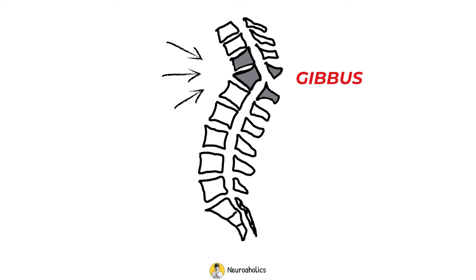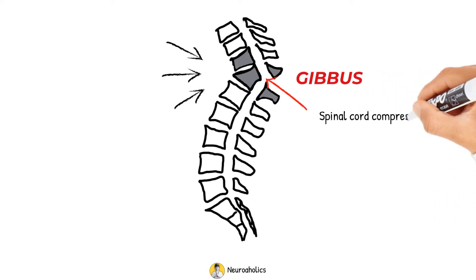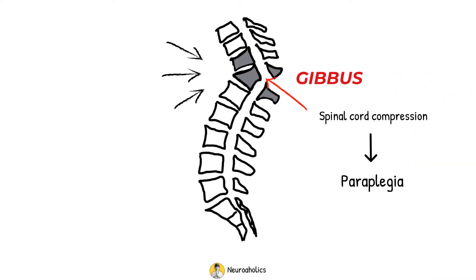Resulting in gibbous deformity, a type of structural kyphosis, this disrupts spinal canal morphology, placing the spinal cord at risk of compression and resulting in paraplegia, particularly in the mid-thoracic segment where the spinal canal is relatively tight around the cord.